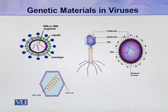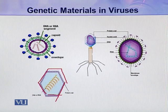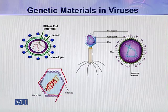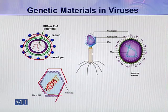Here you can see different types of viruses. In this virus, this is the protein coat, and inside this protein coat, a single molecule of DNA or RNA is present. In another virus, there is also a protein coat, and inside the protein coat there are two or three segments of DNA or RNA.